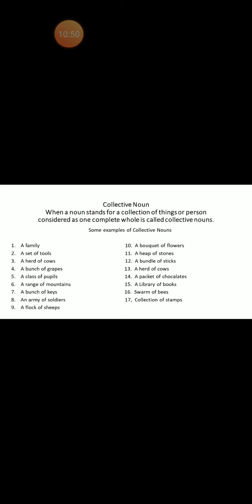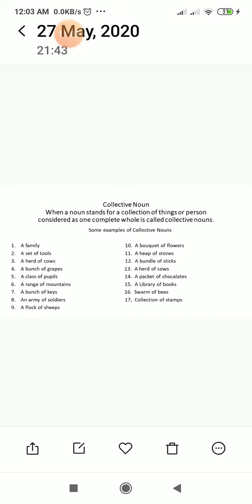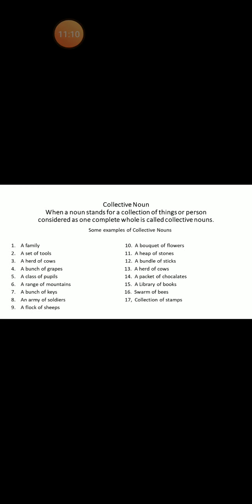A collective noun is a naming word that represents a group of animals, a group of things, or a group of persons. For example, 'family' — in a family we have more than three to four persons, so it describes a group of people. Then 'set of tools' — there are many many tools. Then 'herd of cows' — if there is one cow we say 'cow,' but if there are very many cows, we say 'herd of cows' — H-E-R-D.